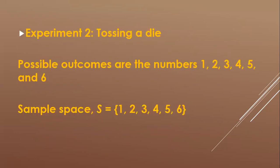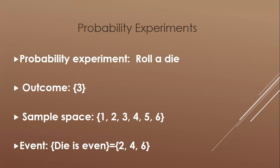For the second experiment, tossing a die: the possible outcomes are the numbers one, two, three, four, five, and six. So our sample space S is {1, 2, 3, 4, 5, 6}.